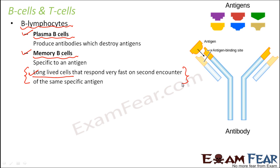When an antigen attacks for the first time, plasma B cells produce antibodies, but it is not certain whether they will be strong enough — that is why many people suffer from diseases like chickenpox on first exposure. However, when the same antigen attacks for the second time, the memory B cells respond very fast and with high intensity. This secondary response means the antigen will most likely not succeed in causing disease.